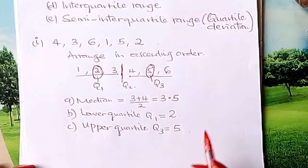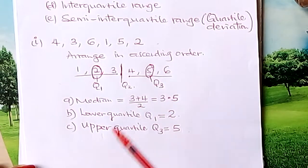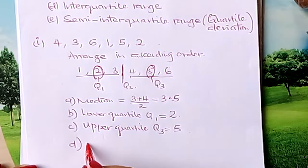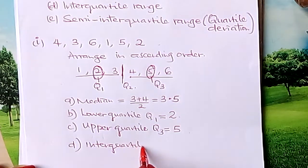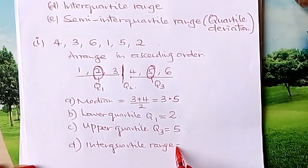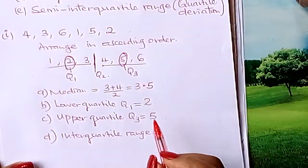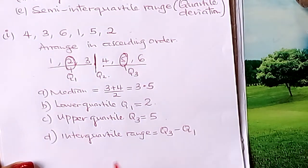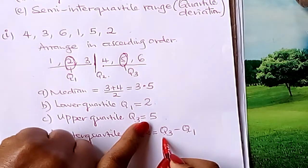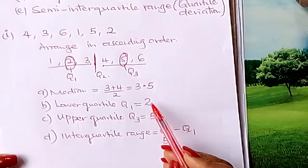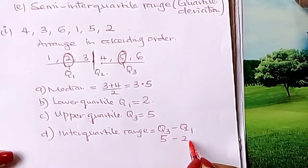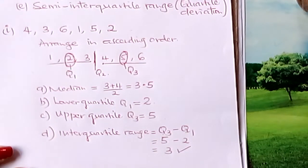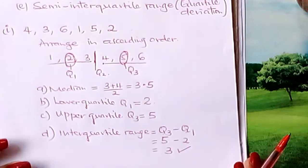We are told to find the interquartile range. To get the interquartile range, it is Q3 minus Q1. Our Q3 was 5 and our Q1 was 2, so you subtract and you get 3. That is the interquartile range: Q3 minus Q1.